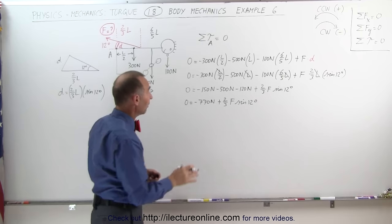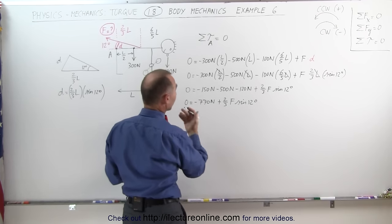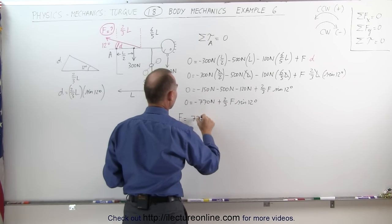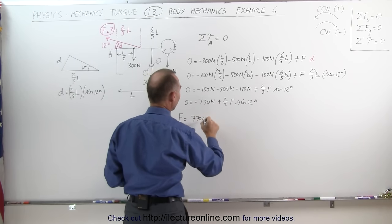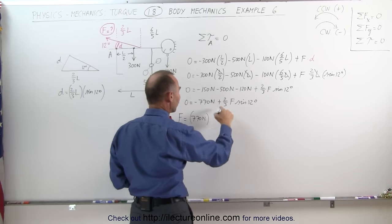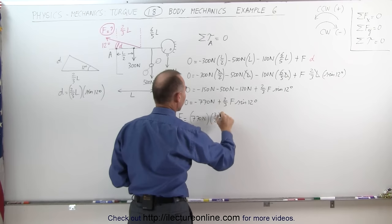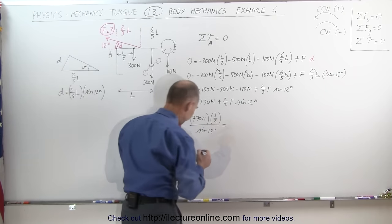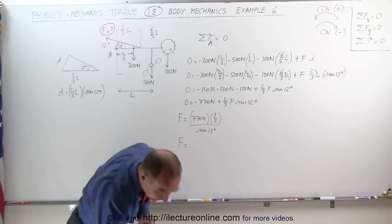Finally now we can solve this for F by moving this to the other side, turning the equation around. We have F equals 770 newtons, that would now be positive, times the inverse of this times 3 over 2, and divide the whole thing by the sine of 12 degrees.